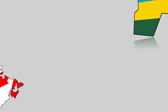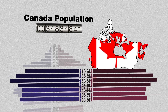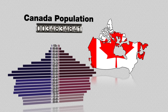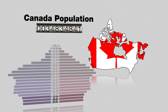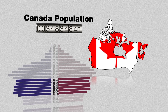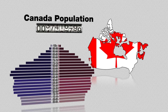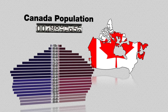For our second example, let's look at Canada, where most of the population is clustered around the middle of the graph. Because there are fewer people in the pre-reproductive age groups than there are in the reproductive ones, the population will grow more slowly, as the number of people reaching their reproductive years decreases.